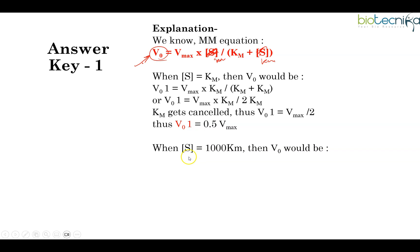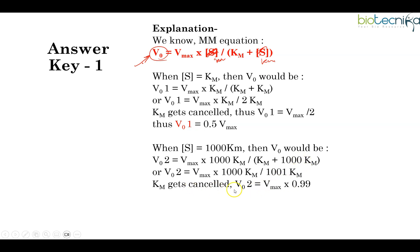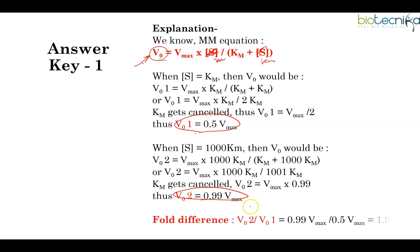When substrate is 1000 Km, substituting into the MM equation gives V02 = 0.99 Vmax. Taking the ratio V02/V01, the fold difference comes out to 1.98. For such questions, you must do calculations carefully — correct unit conversions and powers are critical. The consistency of these question types across exams shows how important this topic is.